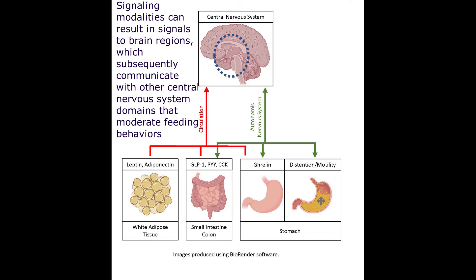It's important that we do a deep dive into the central regulation of how the brain regulates appetite. If any of these pathways in the brain are not working appropriately — because of a genetic mutation or something that has affected that area of the brain — it will tend to drive us to overeat, gain weight, and then develop obesity.